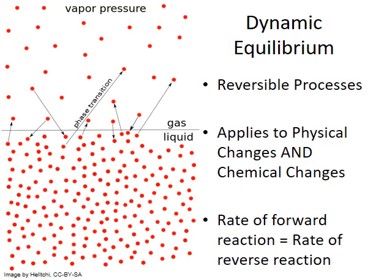When processes are reversible, there is a point at which the rate of the forward reaction equals the rate of the reverse reaction, and we get a steady state or relatively constant amount of our reactants and our products. This state is known as dynamic equilibrium.